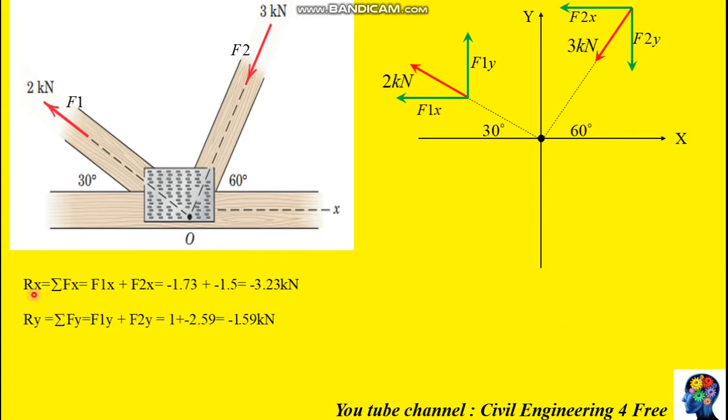The resultant for sum of forces in the x direction will be F1x plus F2x, so it will be minus 3.23 kilonewton. And the resultant of all forces in the vertical direction will be 1 plus negative 2.59, which will give us minus 1.59 kilonewton. Then using vector addition, the magnitude of the resultant will be under square root of Rx squared plus Ry squared.